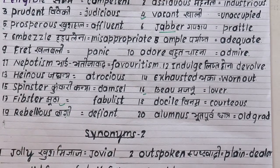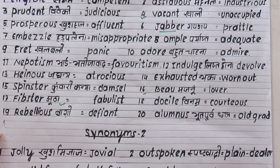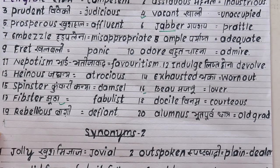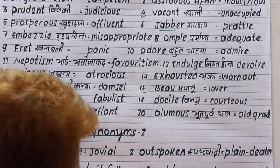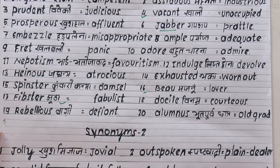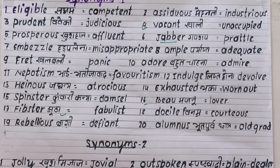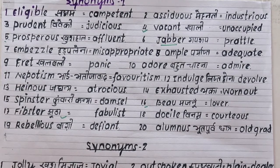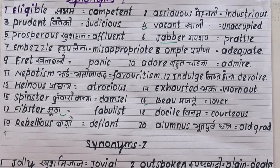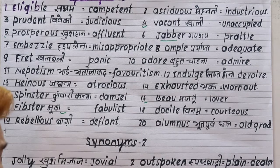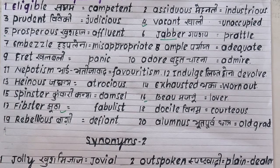Number seventeen is 'flibbertigibbet', meaning a fabulous or talkative, flighty person. For example: you are a flibbertigibbet — you are a fabulous person.